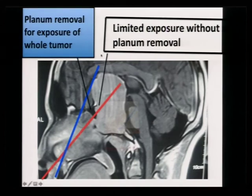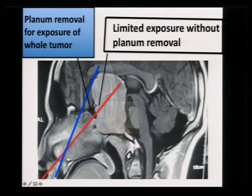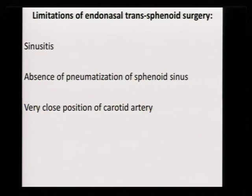Multi-layer closure is recommended. Regarding the planum sphenoidale: if you have a very large pituitary tumour and you don't remove the tuberculum sellae or the planum, it is almost impossible to remove the tumour. Going from the nasal cavity you will not reach it, but if you remove the bone and push the dura up you will reach it — there is no need to take out the dura. Otherwise, part of the tumour in the suprasellar region will be left behind, especially if it is fibrous.